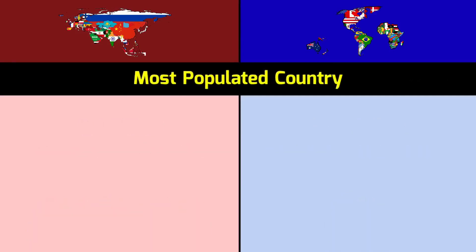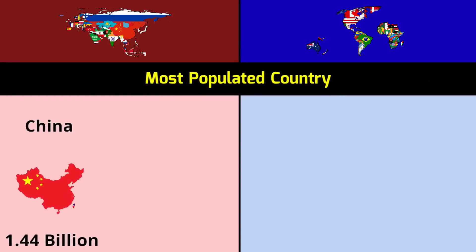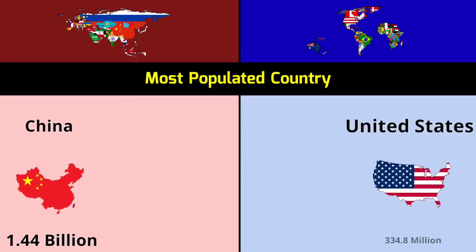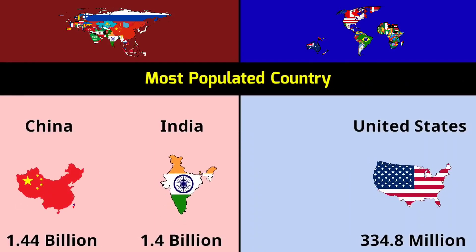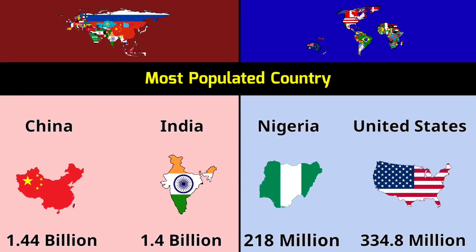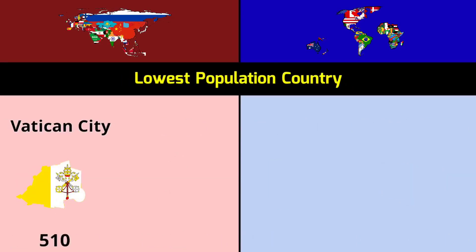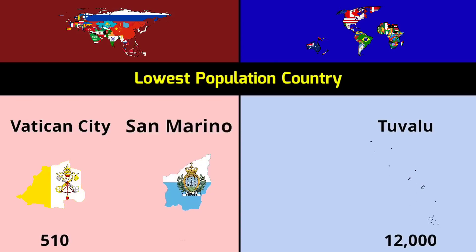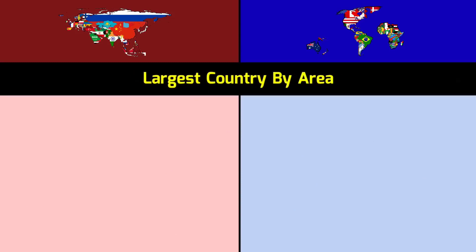Most populated countries — Asia: China 1.44 billion, India 1.4 billion; Rest of World: United States 334.8 million, Nigeria 218 million. Lowest populated countries — Asia: Vatican City with a population of 510, San Marino 33,600; Rest of World: Tuvalu 12,000, Nauru 12,668.